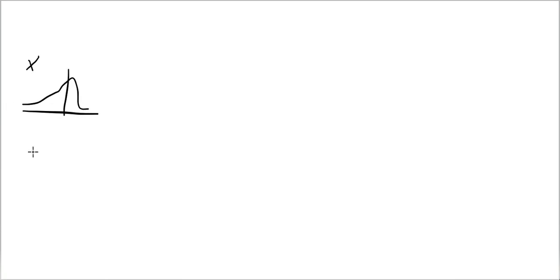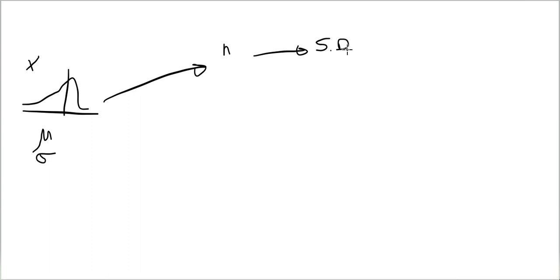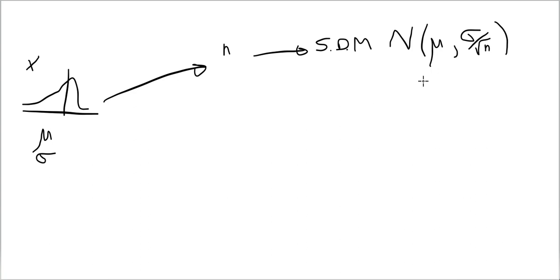So what have we learned so far? We learned that if I have a variable X that has a normal distribution with a mean mu and sigma, and if I were to take a sample of size n, I can draw the sampling distribution of the means. The sampling distribution of the mean is going to be normal with mu_X̄ equals mu and sigma_X̄ equal to sigma over the square root of n.